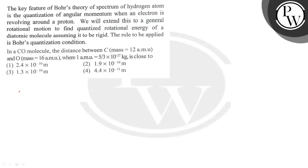Hello students. The question states that the key feature of Bohr's theory of spectrum of hydrogen atom is the quantization of angular momentum when an electron is revolving around a proton. We will extend this to a general rotational motion to find quantized rotational energy of a diatomic molecule.